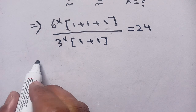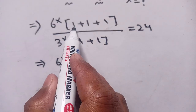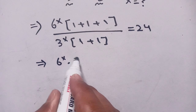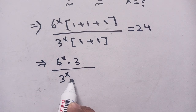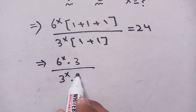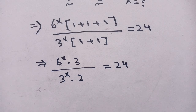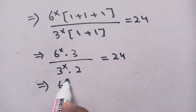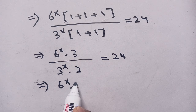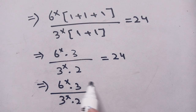In the next step it becomes 6^x times 3, over 3^x times 2, is equal to 24.